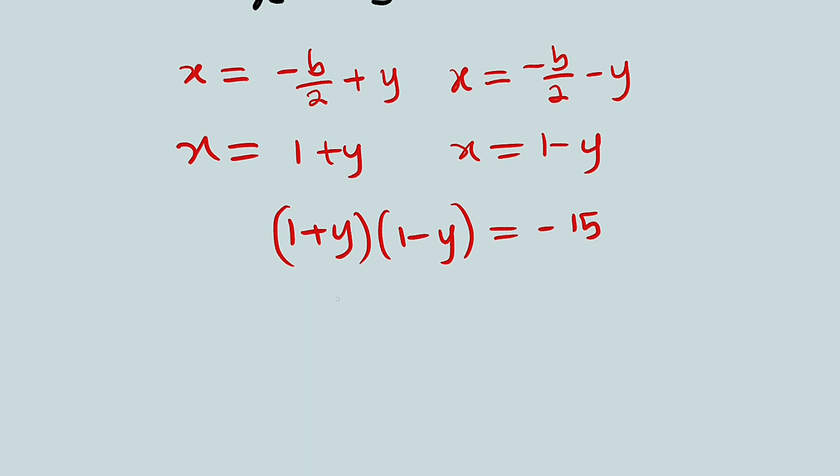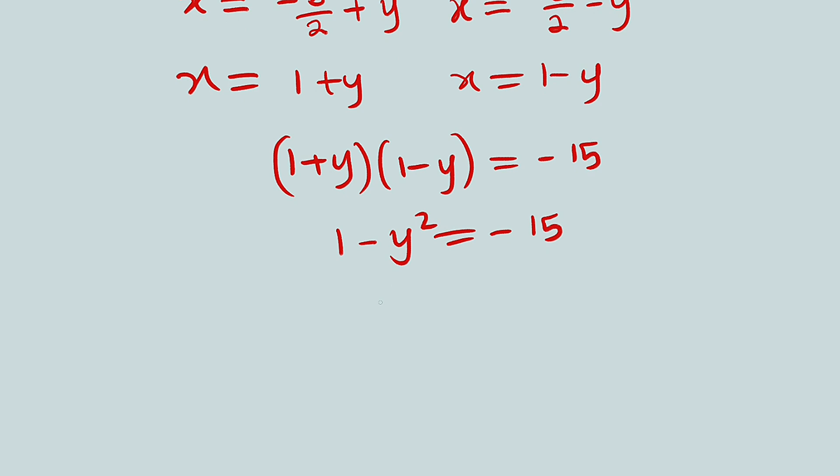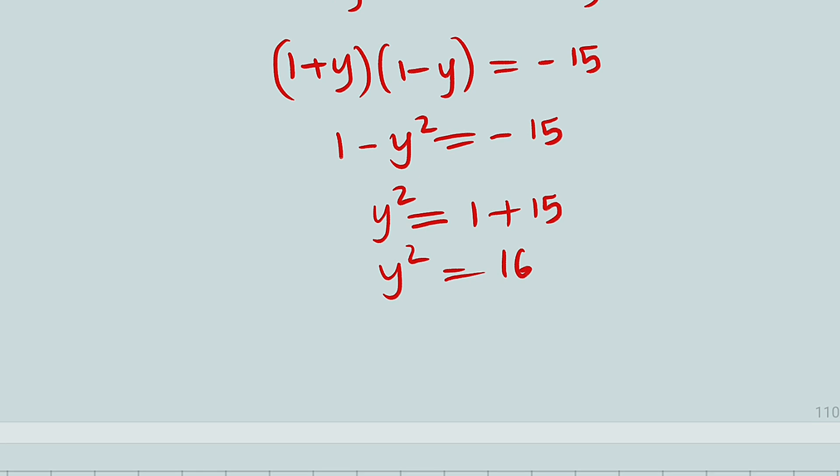This is difference of two squares. You take the first term you square that, 1 squared is 1. You subtract second term squared. This is equal to negative 15, making y squared the subject is equal to 1 plus 15. And 1 plus 15 is equal to 16. And 4 or minus 4 are the only numbers you can square to get 16. Therefore, y is plus or minus 4.